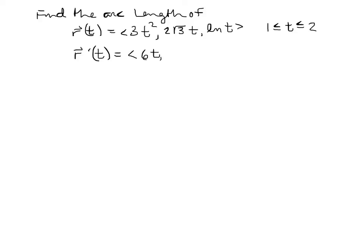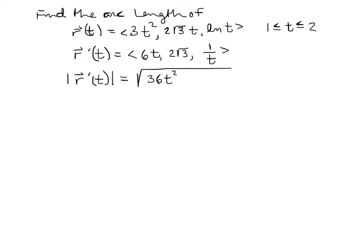The derivative of 2√3·t is 2√3, and the derivative of ln t is 1/t. Now we need the magnitude — the square root of all the components squared. That gives us √(36t² + 12 + 1/t²), since (6t)² = 36t², (2√3)² = 12, and (1/t)² = 1/t².